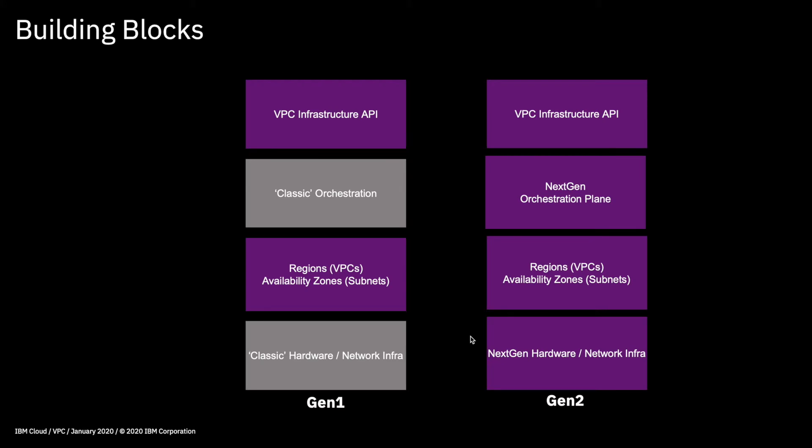If we have a quick look at the building blocks for both Gen 1 and Gen 2, you can see that Gen 1 is based on our classic hardware and the classic network infrastructure. So if you are running virtual machines using our classic offerings, that VPC is built on the same hardware as those classic offerings. It also uses the same classic orchestration plane, so whilst it seems quicker to provision services under VPC than under classic services, it is actually still using the same orchestration plane.